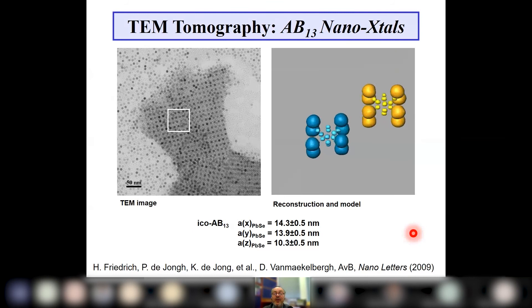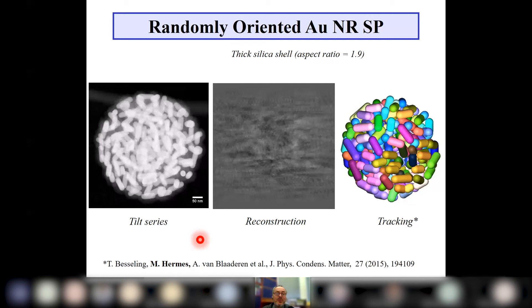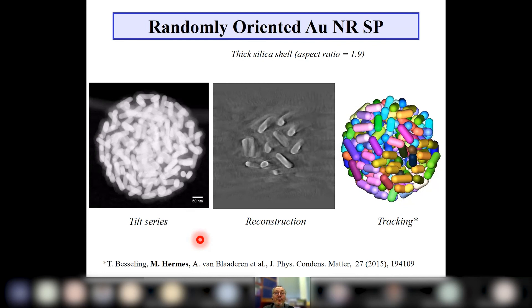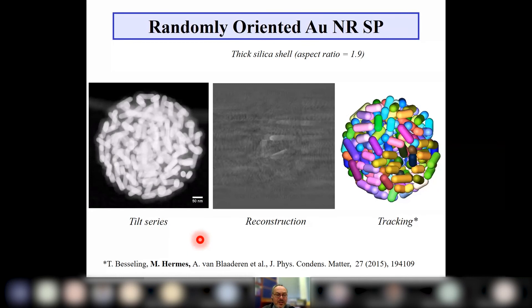About five or six years ago, we became able to analyze not only spherical systems by electron tomography, but also rod-like particles. The scale bar here is 50 nanometers — these are gold rods self-assembled in slowly drying emulsion droplets, coated with a thin silica layer. All the orientations and positions of the rods in this three-dimensional structure were analyzed. Much of this work was contributed by Thuis Besseling and Michiel Hermers, along with many collaborators.